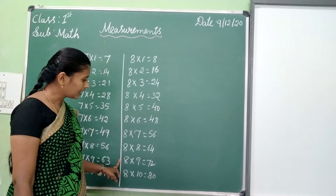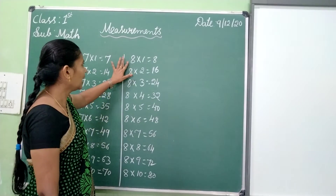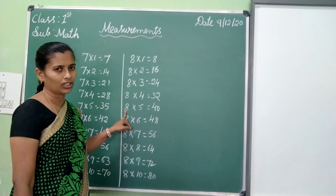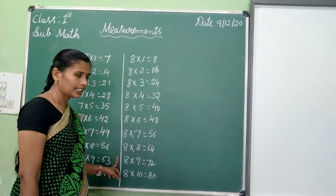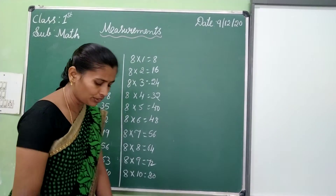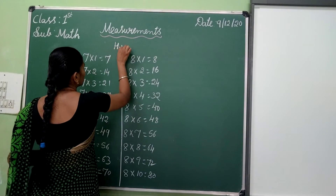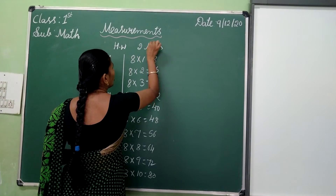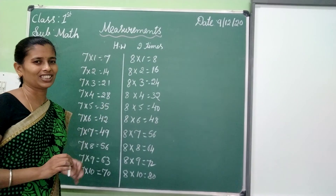Once again — eight ones are eight, eight twos are sixteen, eight threes are twenty-four, eight fours are thirty-two, eight fives are forty, eight sixes are forty-eight, eight sevens are fifty-six, eight eights are sixty-four, eight nines are seventy-two, eight tens are eighty. Okay, now homework: if you didn't draw the containers, draw. Write seven ones are and eight ones are — two times each.